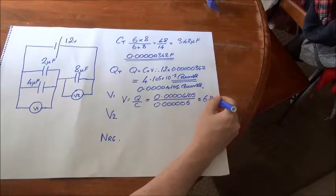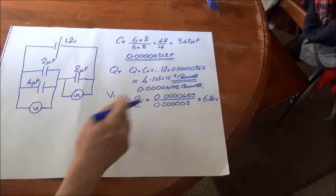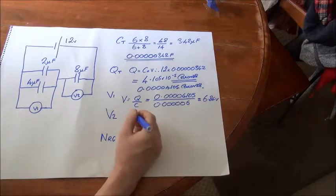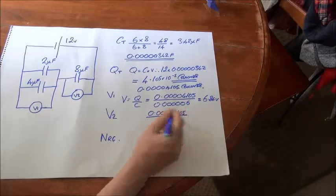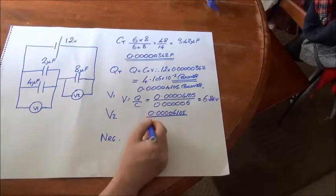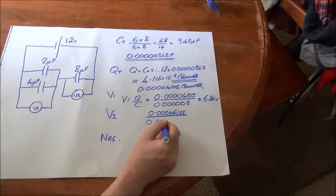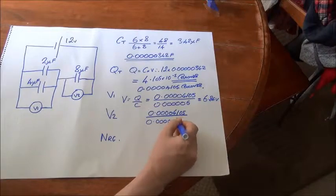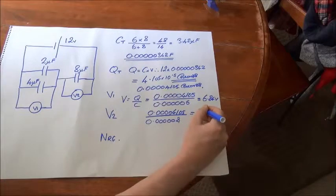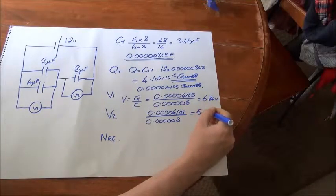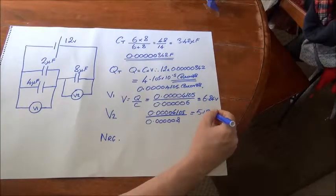So using V equals Q divided by C, we have a voltage V1 of 6.84 volts. And we do exactly the same for V2, so we take this time divided by 8 microfarads. And here we have a voltage of 5.13 volts.